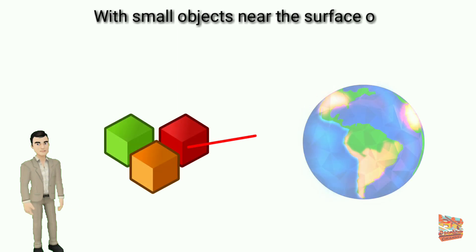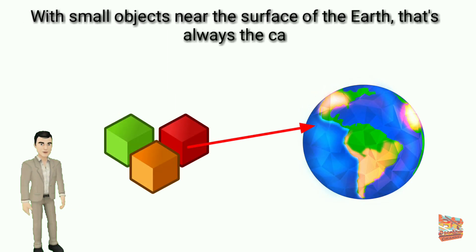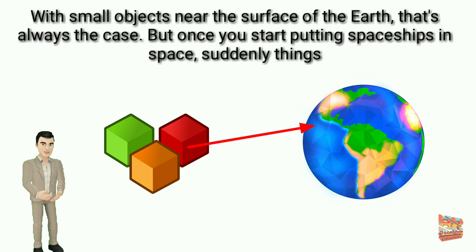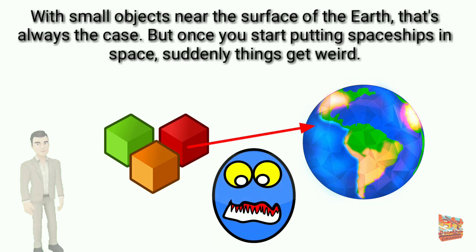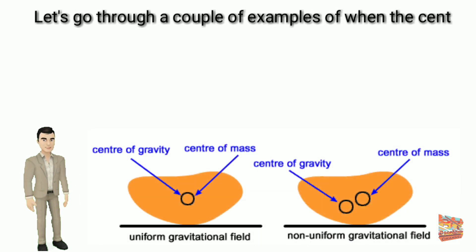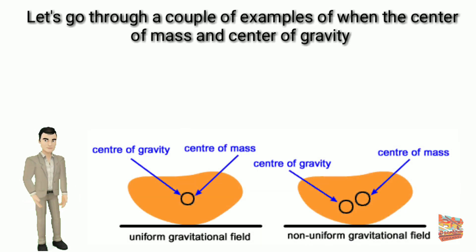With small objects near the surface of the Earth, that's always the case. But once you start putting spaceships in space, suddenly things get weird. Let's go through a couple of examples of when the center of mass and center of gravity are not the same.